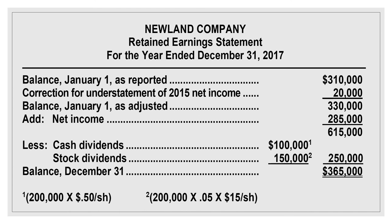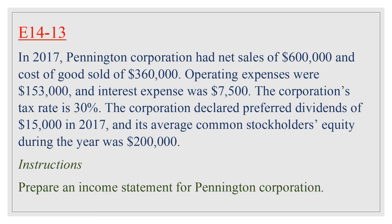Retained Earnings Statement for the year ended December 31, 2017: Balance January 1 as reported: $310,000. Correction of understatement of 2015 net income: $20,000. Adjusted balance: $330,000. Plus net income: $285,000. Subtotal: $615,000. Less cash dividends $100,000 (200,000 shares × $0.50) and stock dividends $150,000 (200,000 × 5% × $15) — total dividends $250,000. Balance December 31: $365,000.